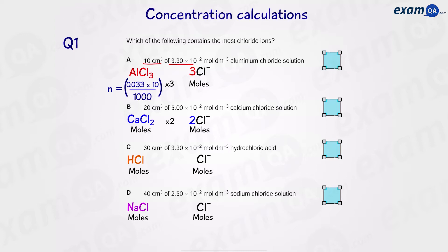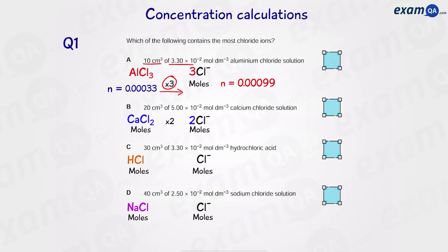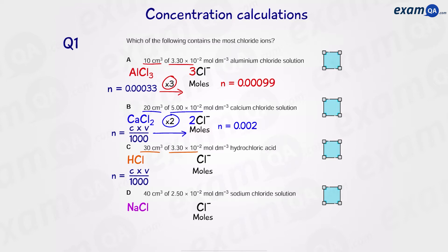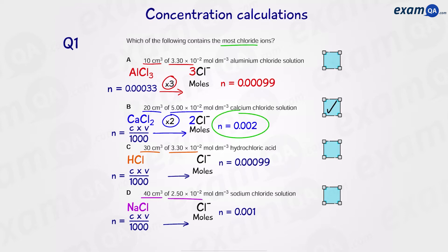Since we have volume and concentration, we can use the formula: number of moles equals C times V over 1000. We divide by 1000 because the volume is in centimetres cubed. Plugging in the numbers gives us the value for AlCl₃, then we times it by three to get the moles of chloride ions. We do the same for calcium chloride — times our answer by two — and for HCl and NaCl we leave it as a one-to-one ratio. Calcium chloride has the most chloride ions, so the answer is B.